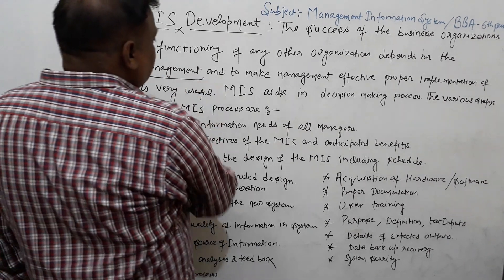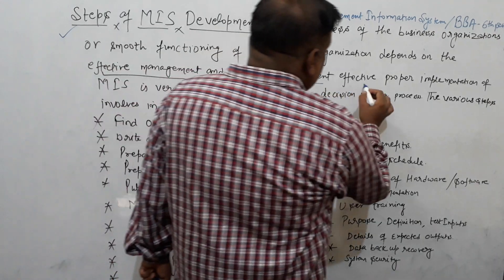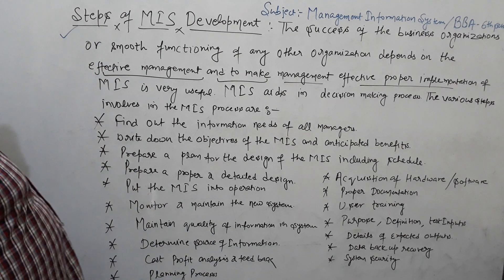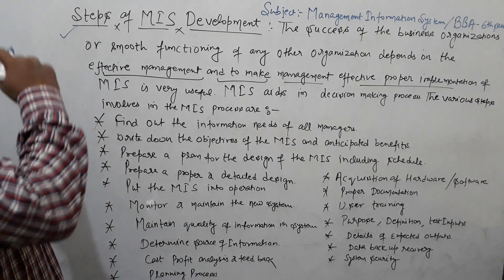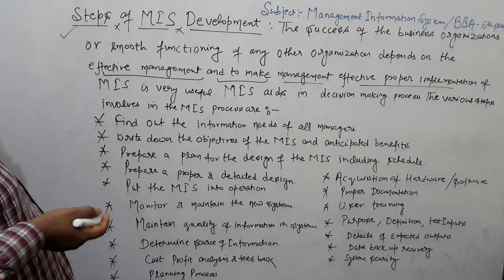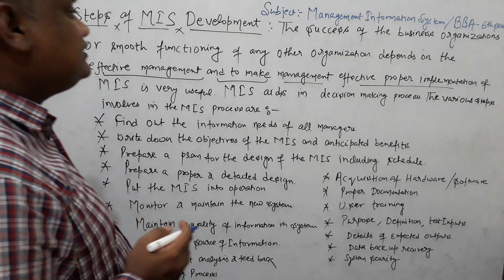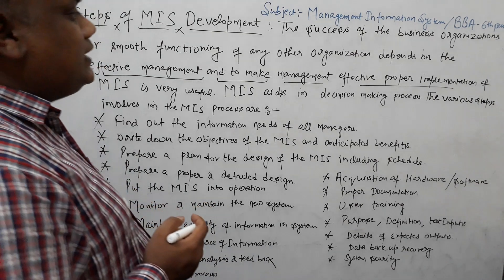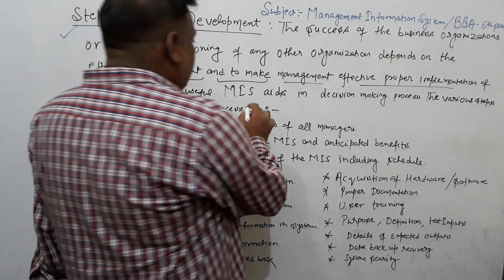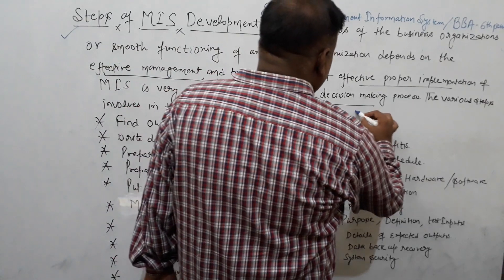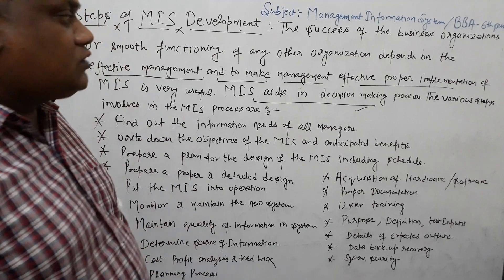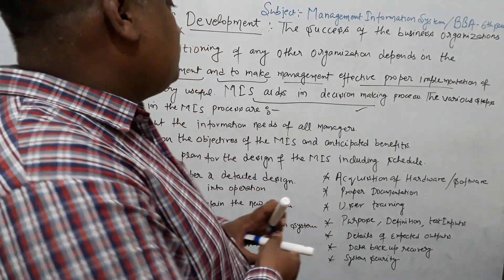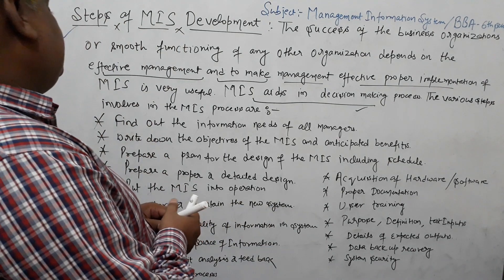To make management effective, proper implementation of MIS is very useful. Effective management must use MIS, and the Decision Support System (DSS) effectively works on its responsibilities so that we can develop and implement MIS, which aids in the decision-making process and supports top-level management.